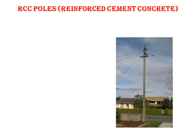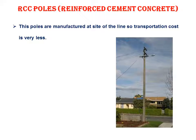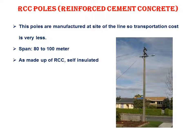Next is the RCC pole — reinforced cement concrete. This is the type you commonly see in your locality. It is manufactured at the site of the line, so transportation cost is very low. Since it is made of concrete, which is a very good insulator, it is well insulated. Maintenance is very good and the life is very long due to the cement construction.